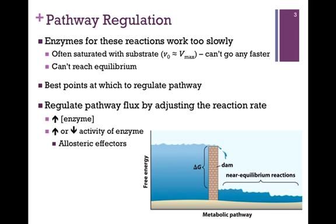The enzymes that catalyze these reactions representing large favorable changes in delta g often work too slowly — that is, they are often saturated with substrate, which means the velocity is pretty close to Vmax. In other words, the enzyme simply can't go any faster. The accelerator is pressed all the way to the floor; the car can't go any faster. So these reactions are the best points at which to regulate the whole pathway.